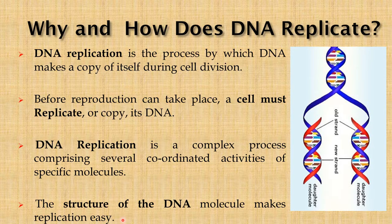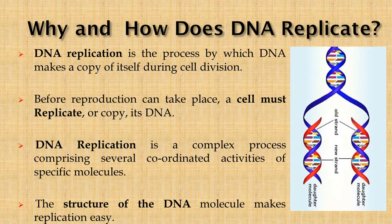Each side of the double helix runs in opposite directions — one up and one down. This gives the structure the ability to unzip down the middle, and each side serves as a template for the other side. During actual replication the helix doesn't unzip completely; on the contrary, a small area called a replication fork is unzipped instead.